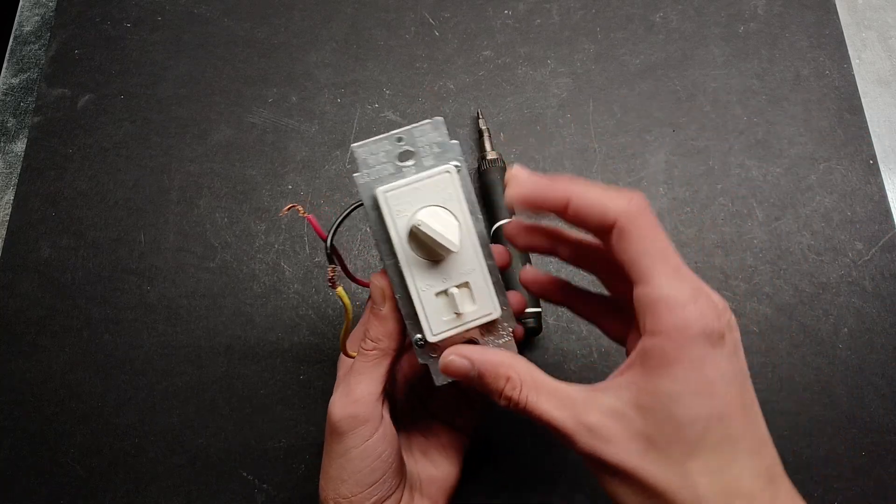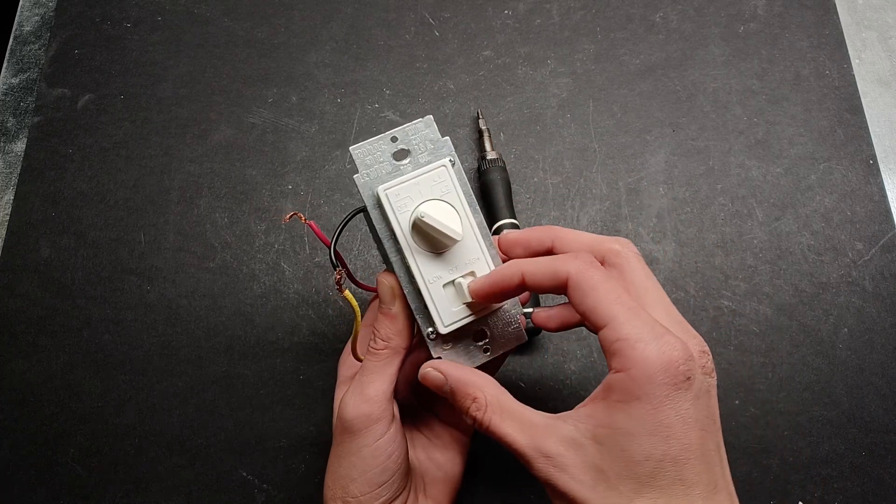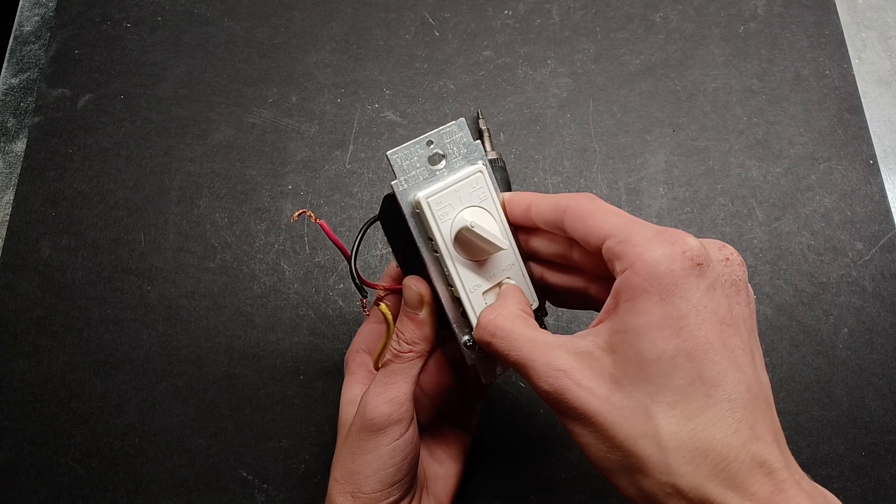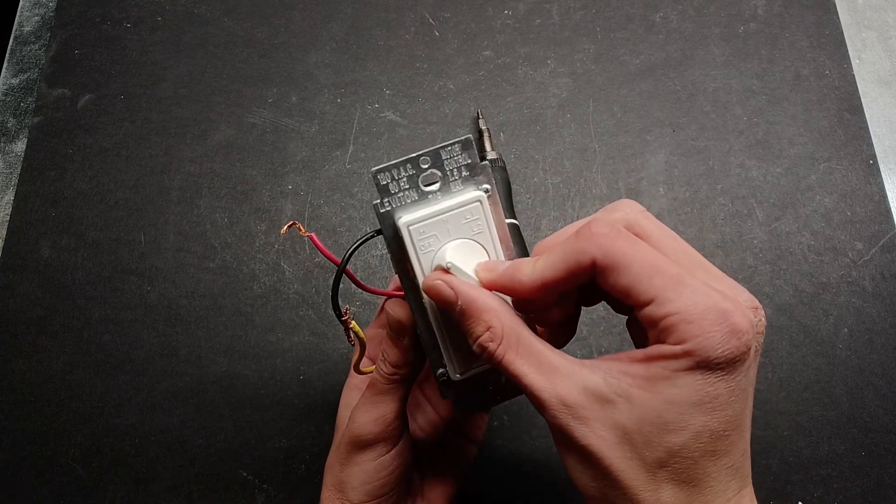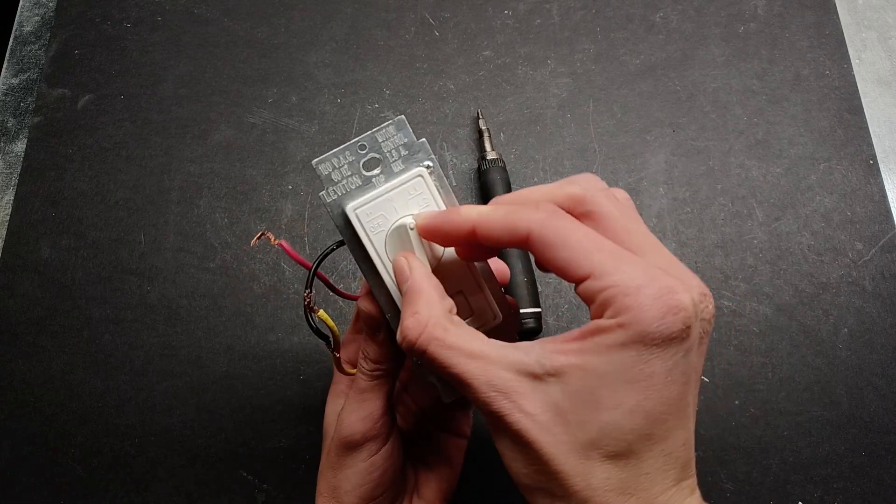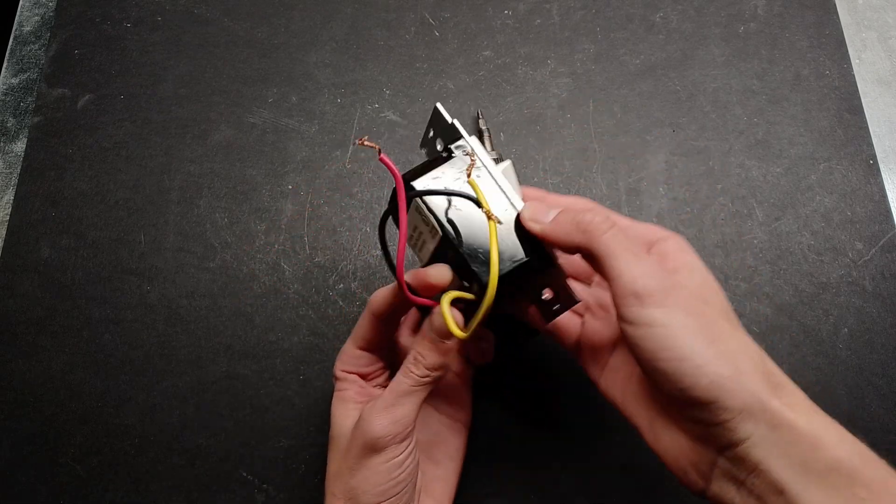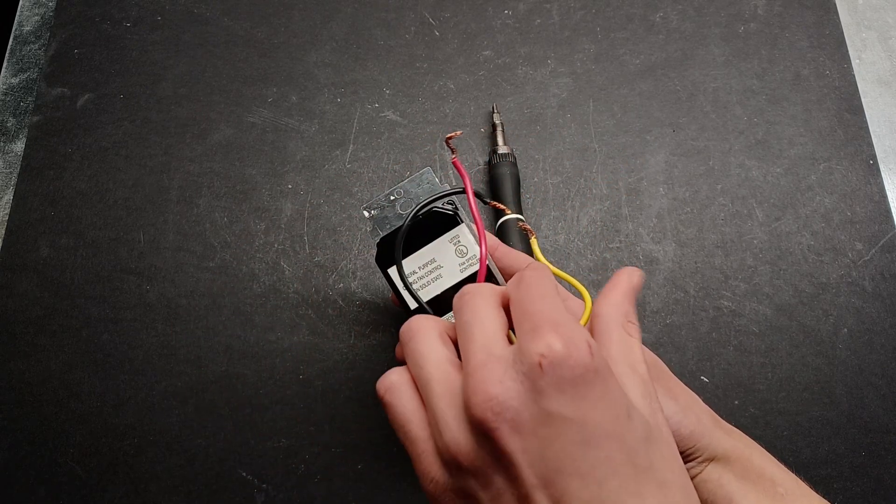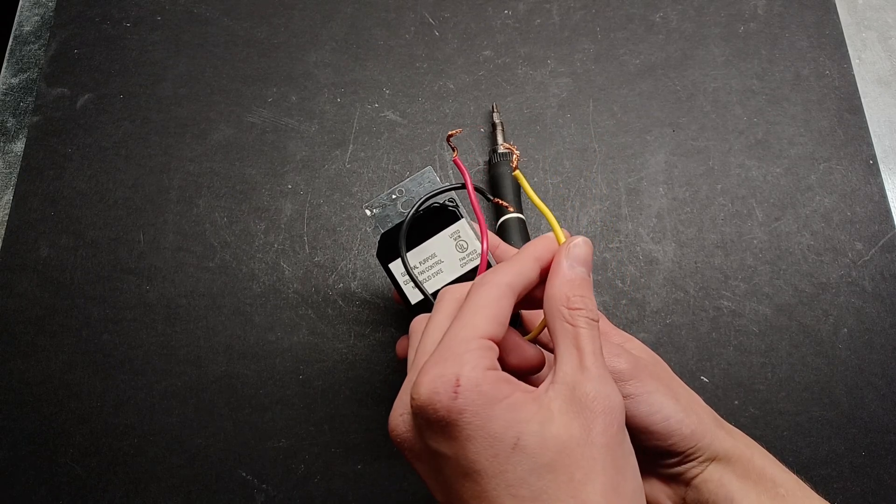This was originally installed and used for a ceiling fan and light combination. It has a switch to select between low, off, and high brightness for the light, and a selector to select four speeds and off for the fan. It uses three wires: one for power, one for sending power to the light, and another for sending power to the fan.